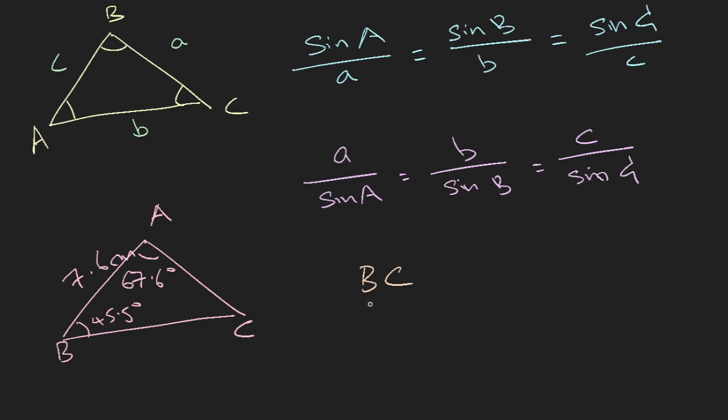So BC over the sine of the angle that is opposite, 67.6 degrees, would be equals to any other ratio of the side and the opposite angle. So what do we have? We have 7.6 which is side AB, we are going to make use of it. So 7.6 over sine of angle C. Now you don't have angle C, but it's okay because you know that the sum of the angles in a triangle is up to 180. So you can always use that property to find out.